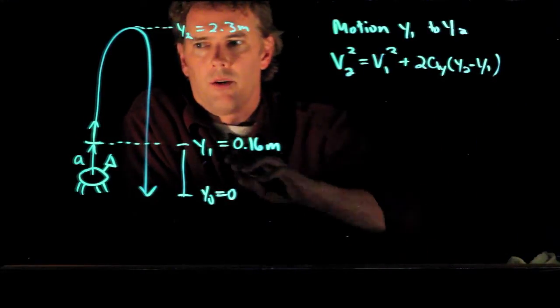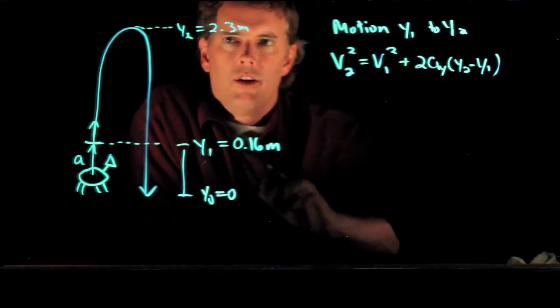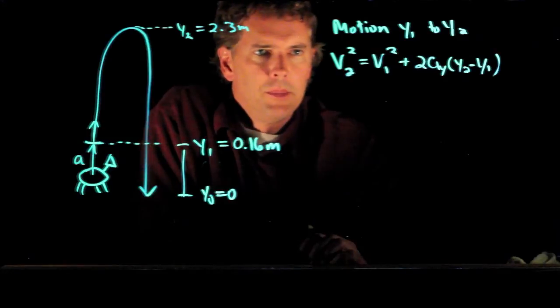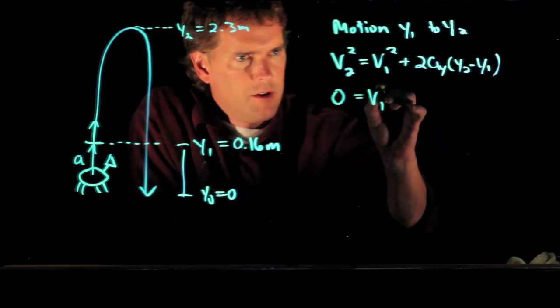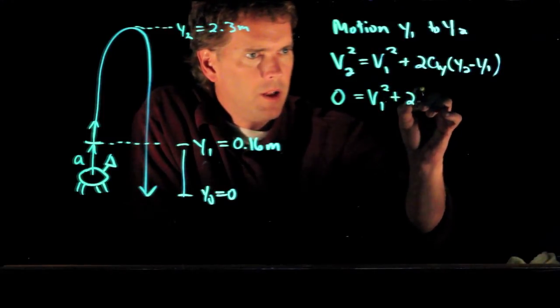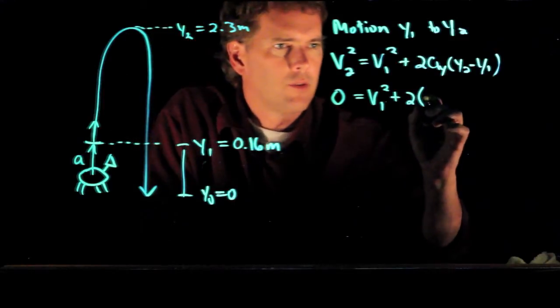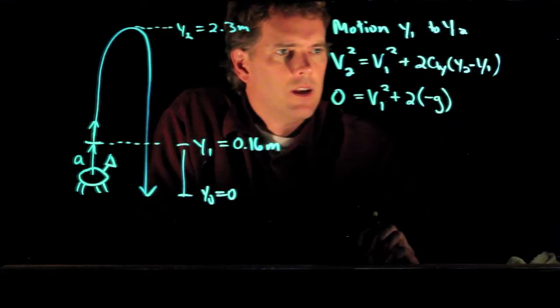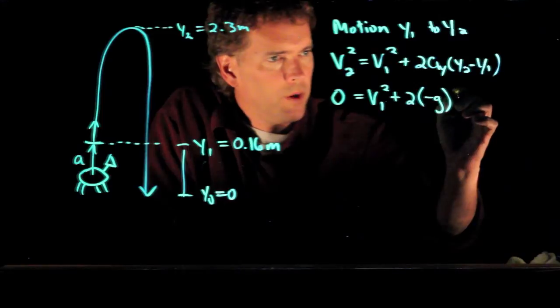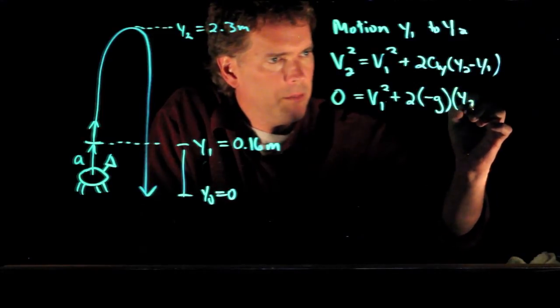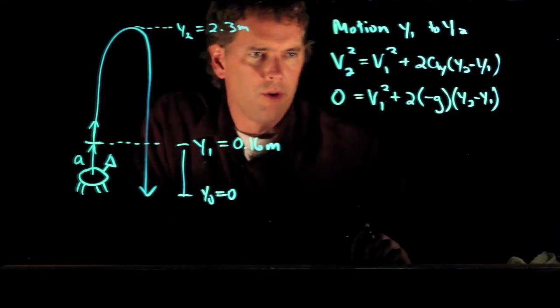All right, so v1 is some positive number, v2 is their speed at the top and that is of course 0. So we have 0 = v1² + 2 times the acceleration in this region, which is of course negative g. y2 is 2.3, y1 is 0.16, so we'll just leave both of those variables in there and now we can solve this equation for v1.